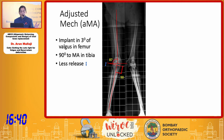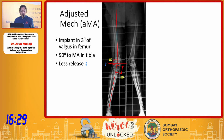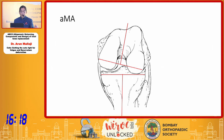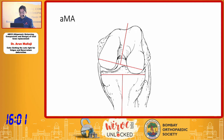In adjusted mechanical alignment, you always cut the tibia at 90 degrees, make an adjustment on the femur, and may accept 2 to 3 degrees of valgus on the femur. This reduces the amount of release required, and this is my preferred choice in a valgus knee. In flexion gap balancing, you will either need to do a release or internally rotate the femoral component — my personal preference is to do a release.